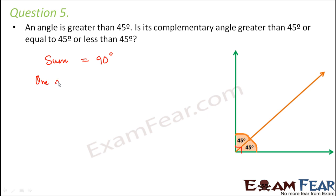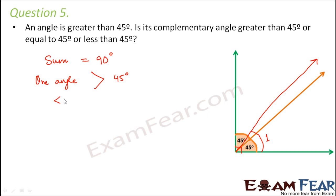In this question, it is given that one angle is greater than 45 degrees, so one angle could be somewhat like this. Let us call this angle 1. It is given that angle 1 is greater than 45 degrees. Now what we have to tell is whether angle 2 would be greater than 45, equal to 45, or less than 45.